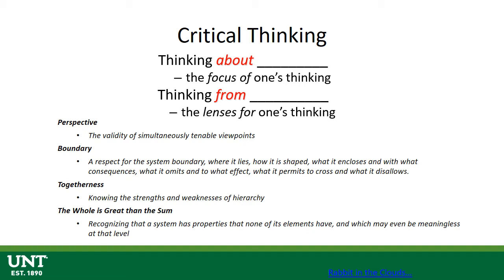We talk about passive and active problem owners. An active problem owner is somebody that can influence the problem, and the problem can, in essence, influence them. Things that I deal with in my own life — what I'm going to do in a given day — I can influence what happens, but also what I interact with can influence me. That's part of my sphere of influence and my boundary.